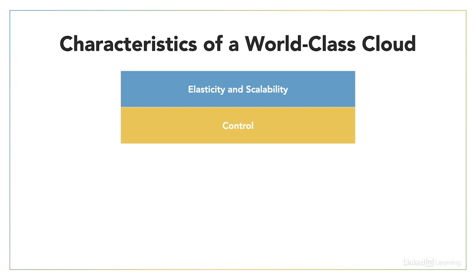Control typically is going to be given to other people, at least at the infrastructure level. We're still in control of our data, our applications, our operations and security. But ultimately we're sharing control with somebody else, whereas with an on-premise system it's completely ours.